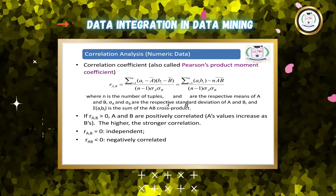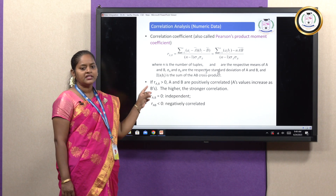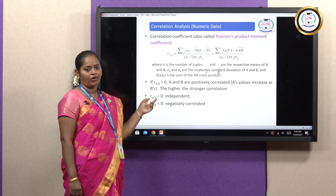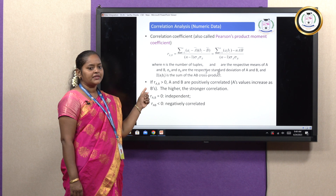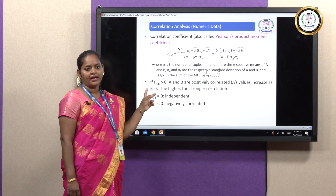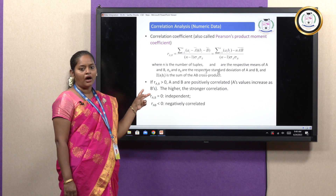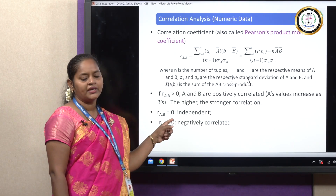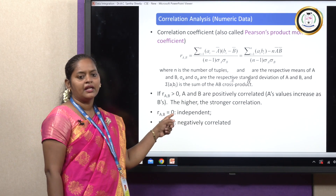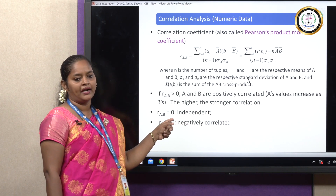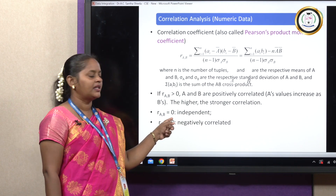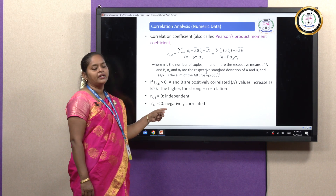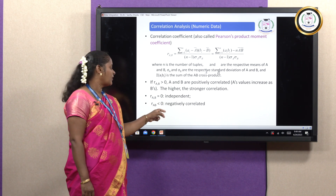This helps identify whether a relationship between attributes exists. If R(A,B) > 0, both attributes are positively related. If R(A,B) = 0, the attributes are independent — no relationship. If R(A,B) < 0, the attributes are negatively correlated.